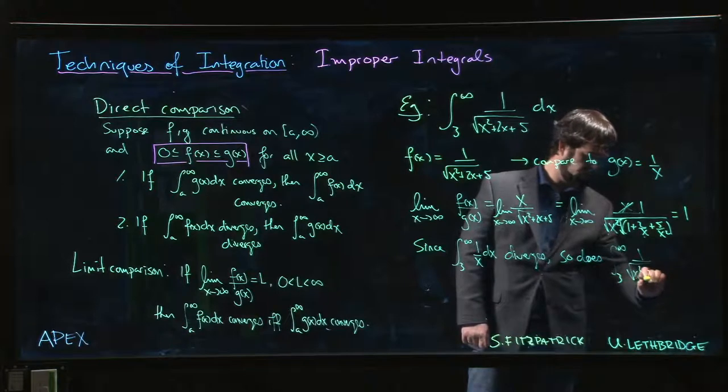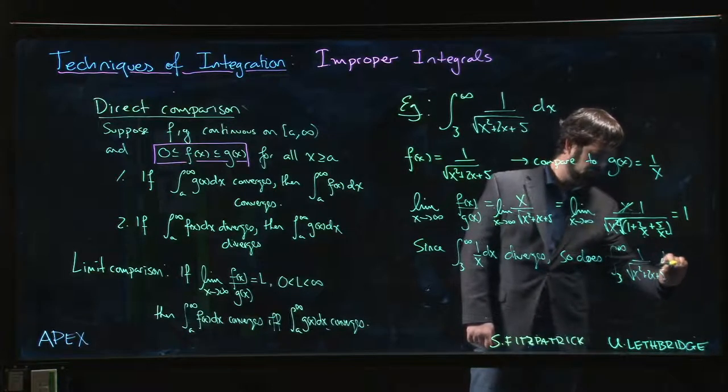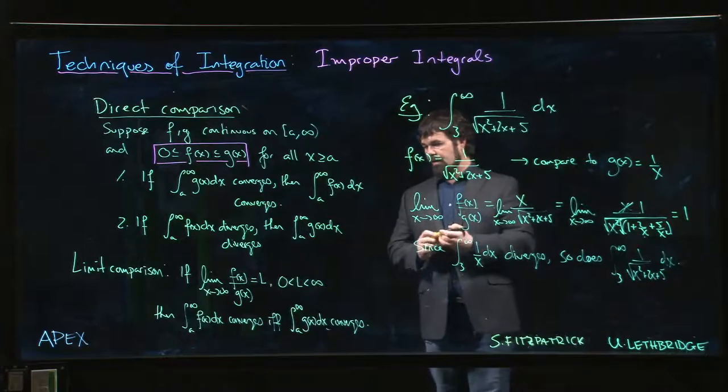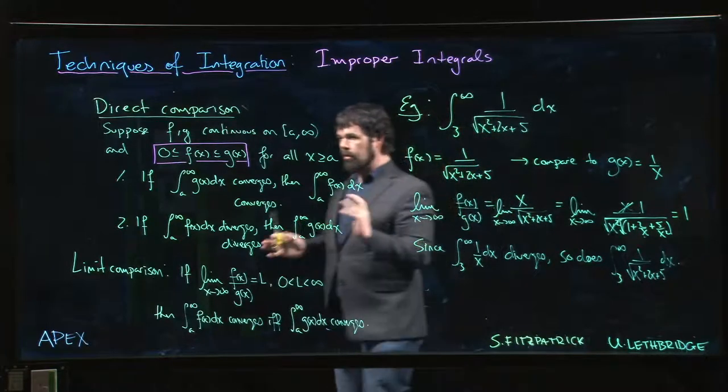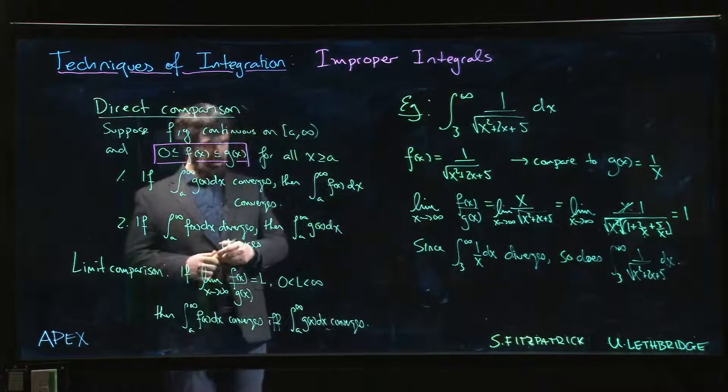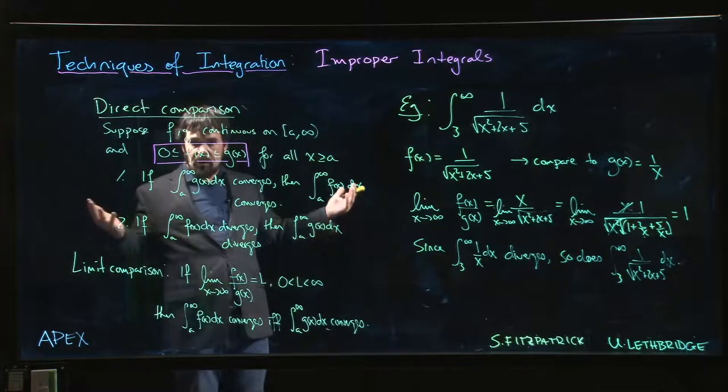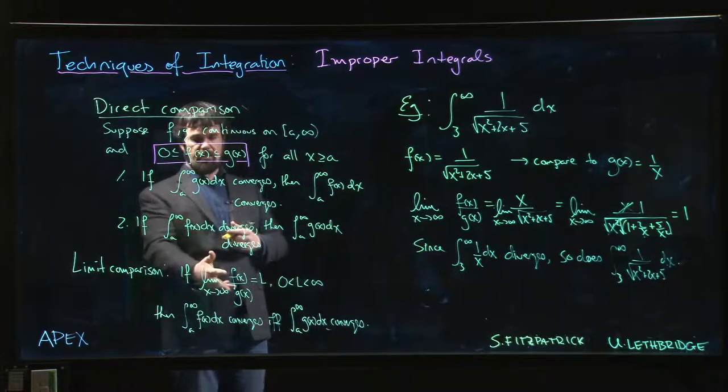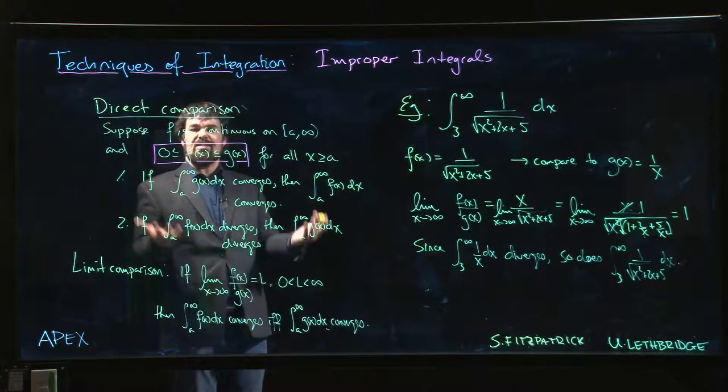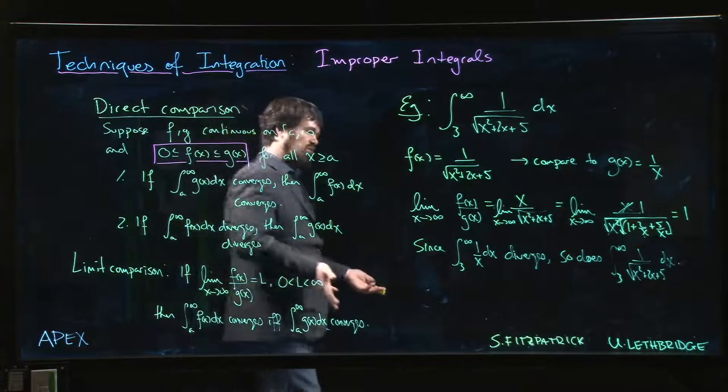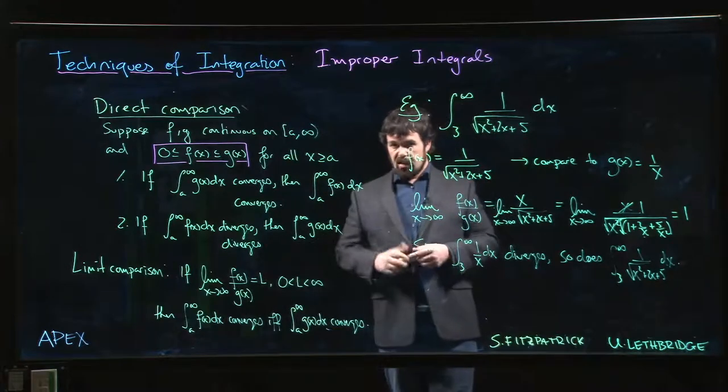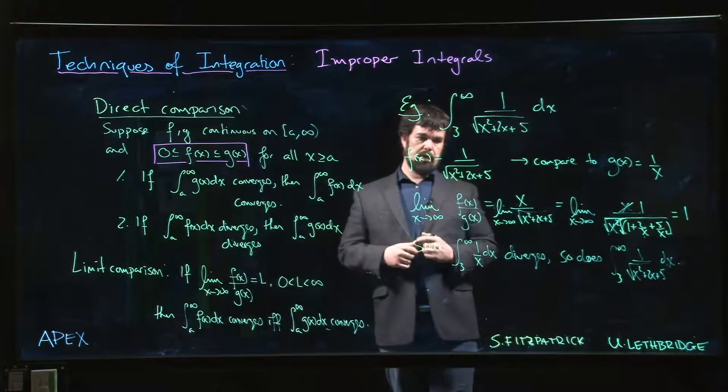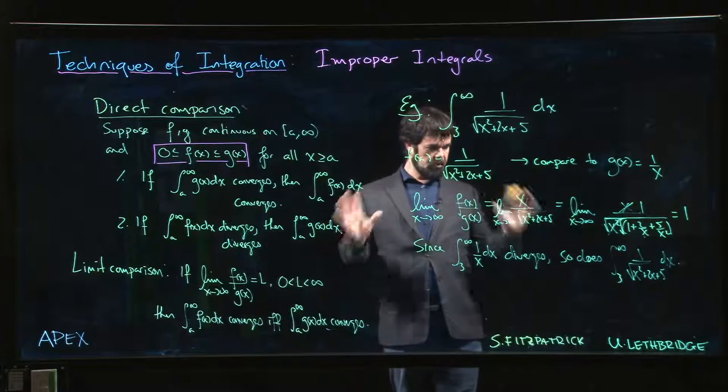So limit comparison is really handy because you don't have to fiddle around with setting up inequalities - you just take the limit of the ratio and see what you get. Sometimes this is a lot easier. Other times it's easy to see the inequality right away and so you just go with it. But if you can't spot an inequality, you always have limit comparison as a backup.